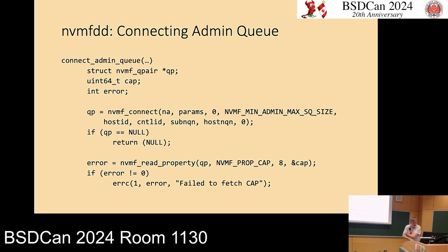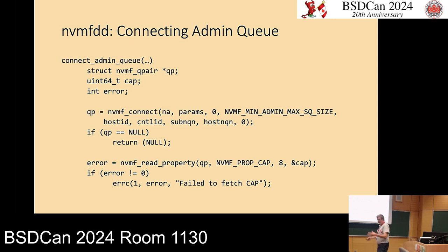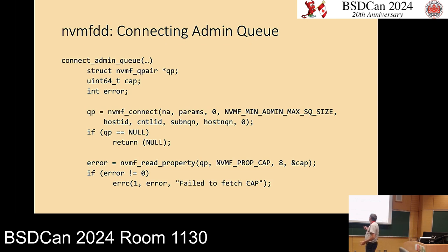Let's look at some code. The first snippet inside nvmfdd establishes the admin queue pair. We call nvmf_connect — which allocates the queue pair, sends the connect command, and handles negotiation. You pass your host ID, your NVMe qualified name, and the qualified name of the controller you're trying to talk to. If it works, you get back a queue pair. Then we call read_property to fetch the capabilities register.